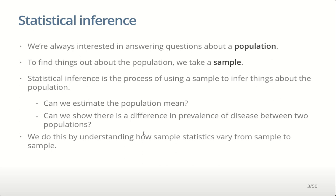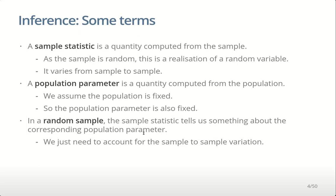This is what we did in lab two. A sample statistic is a quantity worked out from your sample. Because samples vary — if you take a different sample you'll get different data points and different individuals — the summaries of those individuals, your sample statistics, are going to vary from sample to sample. Each sample statistic will correspond to a parameter in the population.